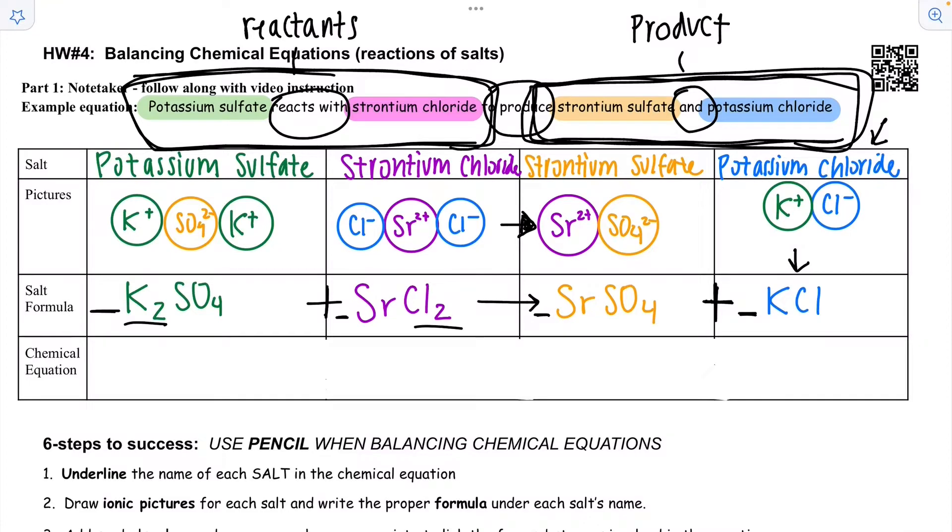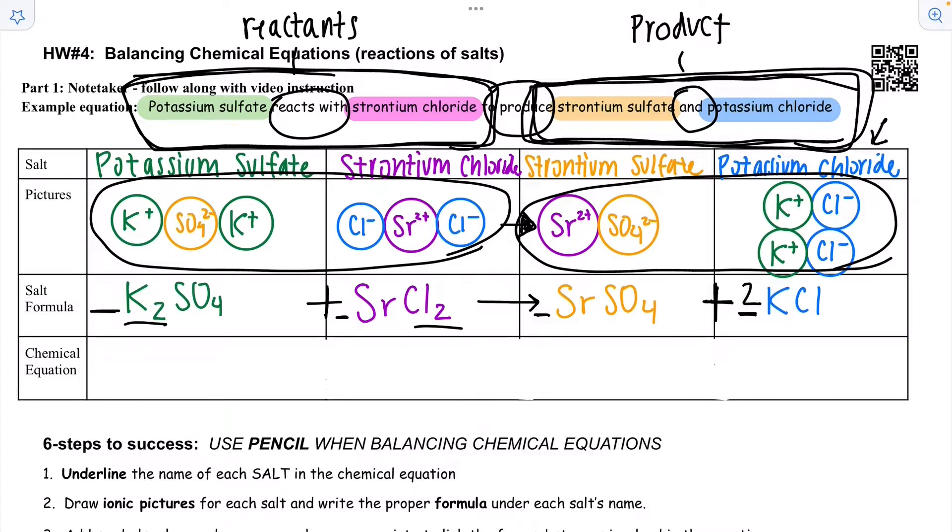The proper way to balance this chemical equation is to put a two in front of the potassium chloride. And what it's communicating is that I create two of these. Here they are. Now you can see that the ions that I start with is the same amount of ions that I end with. They've just been rearranged into new salts. The next step is to write my chemical equation out. If there is no number, it's assumed it's a one and you don't need to write that.